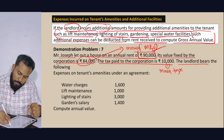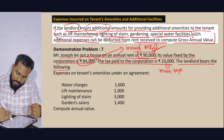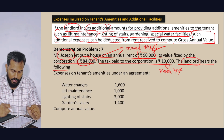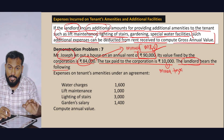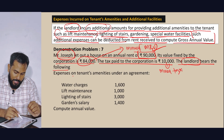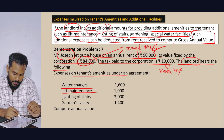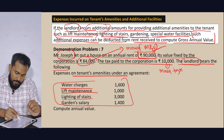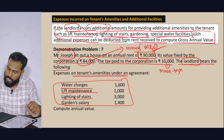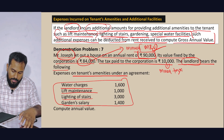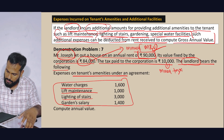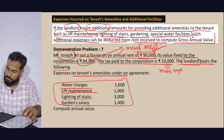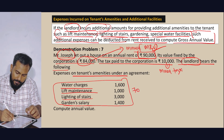The landlord, Joseph, bears the following expenses: water charge, lift maintenance, lighting of stairs, gardening salary. Adding these amenities: 1,600 + 1,000 + 3,000 + total = 7,000.